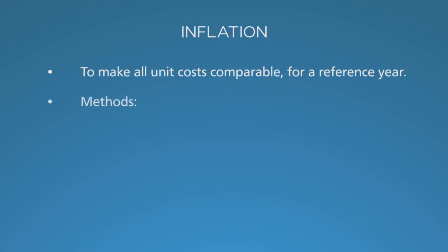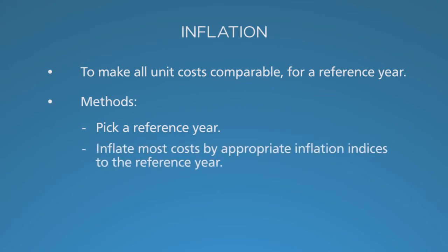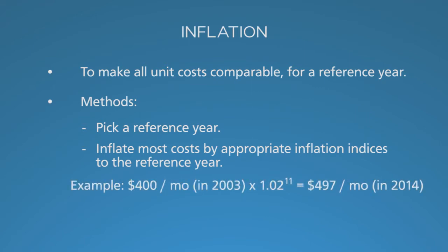The methods are straightforward. First, pick a reference year — usually the year of completion of your analysis. Then, for each cost input, decide if it's subject to normal inflation. If it is, use local inflation indices to make the adjustment. For example, if the nurse earned $400 per month in 2003 and local wages are rising at 2% per year, that is $497 per month in 2014. In the absence of wage data, you can use general inflation indices.